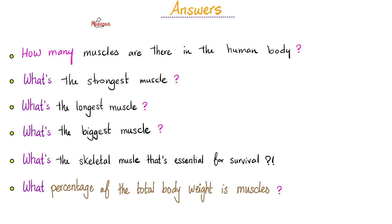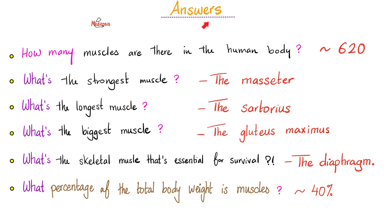Can you answer these questions about muscles? How many skeletal muscles are there? What's the strongest skeletal muscle? What's the longest? What's the biggest? Which is essential for survival? And what percentage of total body weight is muscles? Here are the answers: you have 620 skeletal muscles. The strongest is the masseter. The longest is the sartorius. The biggest is your gluteus. The one essential for life is your diaphragm, in order to breathe. And 40% of your total body weight is muscle.